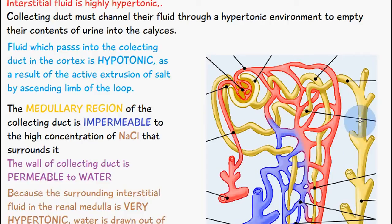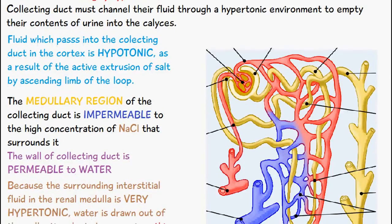The collecting duct has to channel its fluid through this highly concentrated environment, and when the fluid finally reaches the collecting duct it's actually going to be quite hypotonic because of all the removal of the salt from the previous ascending limb.